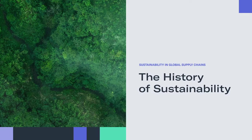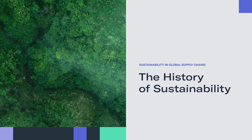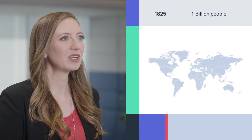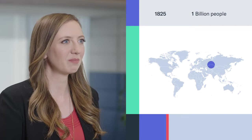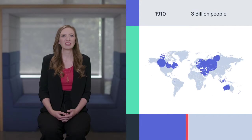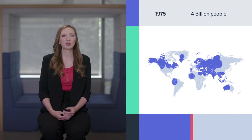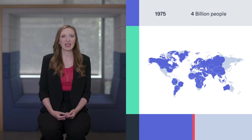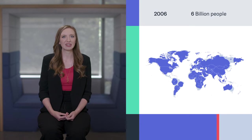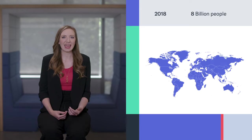Let's talk about the history of sustainability. Since the industrial revolution, the growth of the human population and the use of natural resources has been accelerating at an alarming rate. Back in 1825, the world's population doubled from 500 million to 1 billion people. 150 years later in 1975, we quadrupled that to 4 billion people, and only 43 years later in 2018, we doubled that again to 8 billion people.